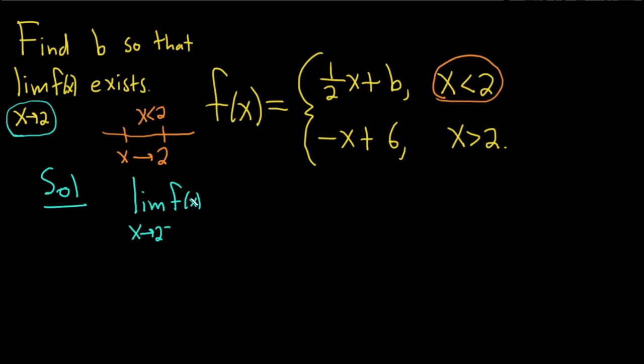So now we're going to replace f of x with the top piece. So this is equal to the limit as x approaches 2 from the left of 1 half x plus b. And now we can replace x with 2.